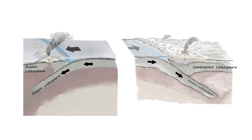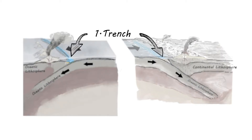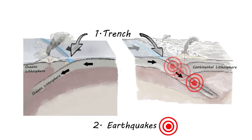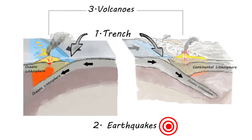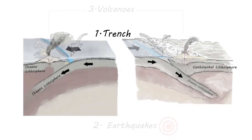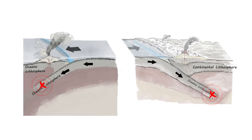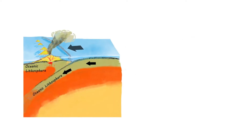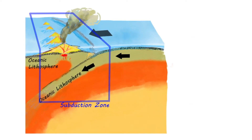There are three important features of convergent margins that subduct oceanic plates. Trenches are where the oceanic plate begins to subduct. The deepest earthquakes in the Earth happen beneath convergent margins, and these earthquakes define an inclined seismic zone that tells us where the subducted oceanic plate is.